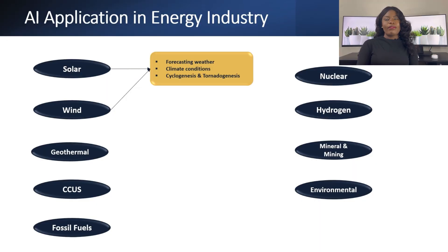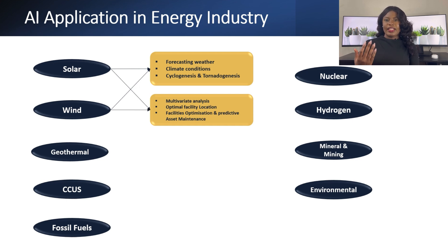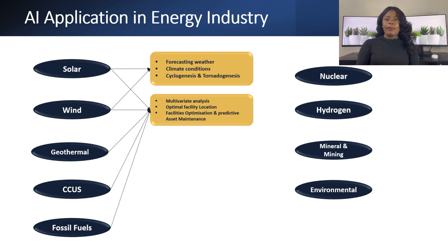Second, we have multivariate analysis. Within the industry, we have lots of features or variables we are trying to analyze. With machine learning, we can optimally analyze these datasets, optimizing both time and cost. Machine learning can also help locate or optimally place our facilities in the best location, which is applicable to almost everything we have here.